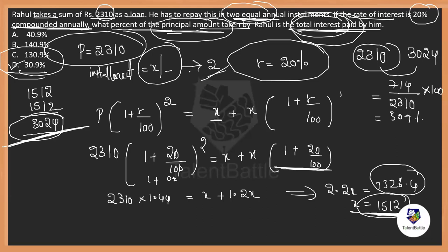So, first by using the formula of installments, we are going to identify how much is the installment that he is going to pay. One time if he pay 1,512 rupees, two times he will pay 3,024 rupees. He took this much, he paid this much. Means this is the interest occurred. So, interest divided by principal into 100. 30.9 percentage. This is how the installment's problems will be solved.